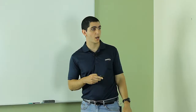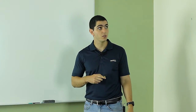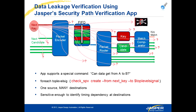Let's see how we can do this check using Jasper's Security Path Verification App. This application allows the user to ask the tool a question: can data ever go from A to B? In this case, we're going to ask if data can ever go from A to all of the top-level signals in the design. We use some automation to create all of these checks — one source and many destinations — and then run a formal proof on these assertions.